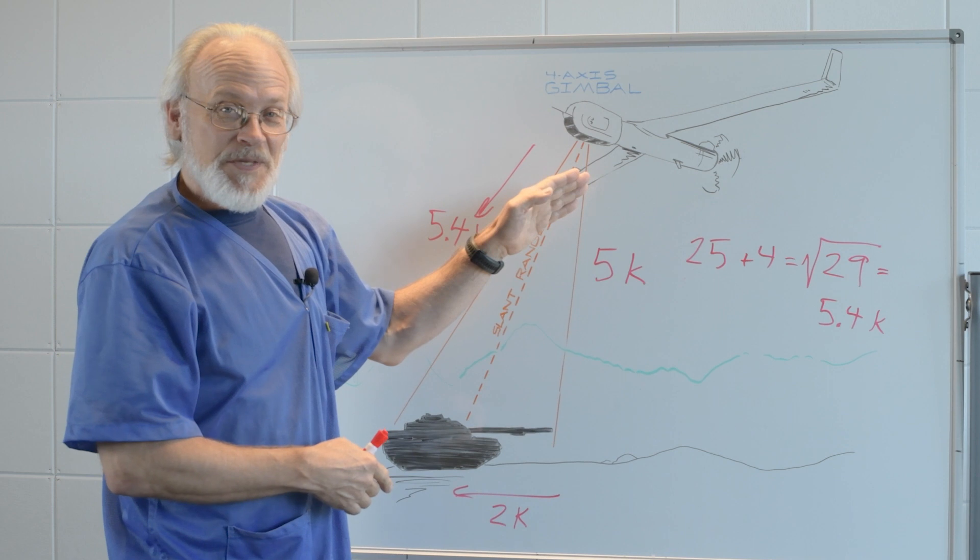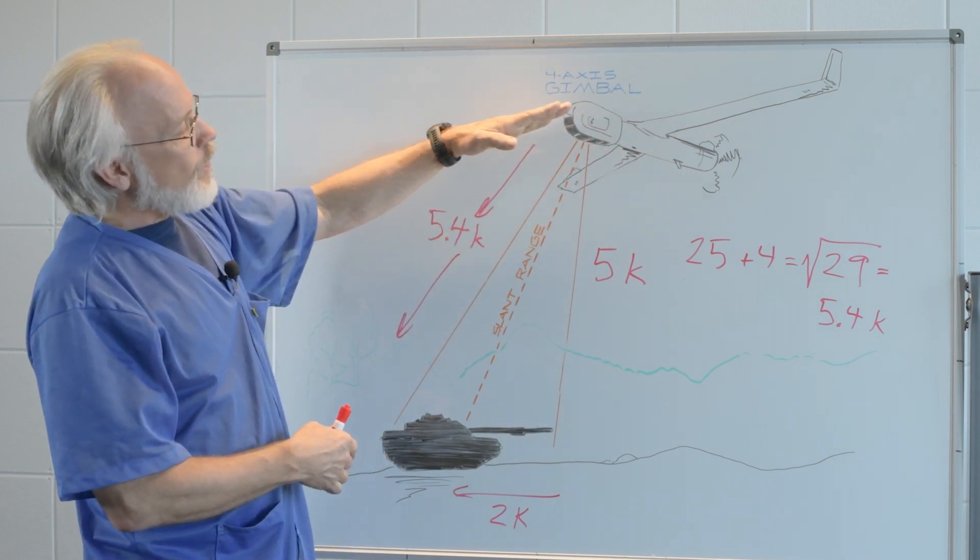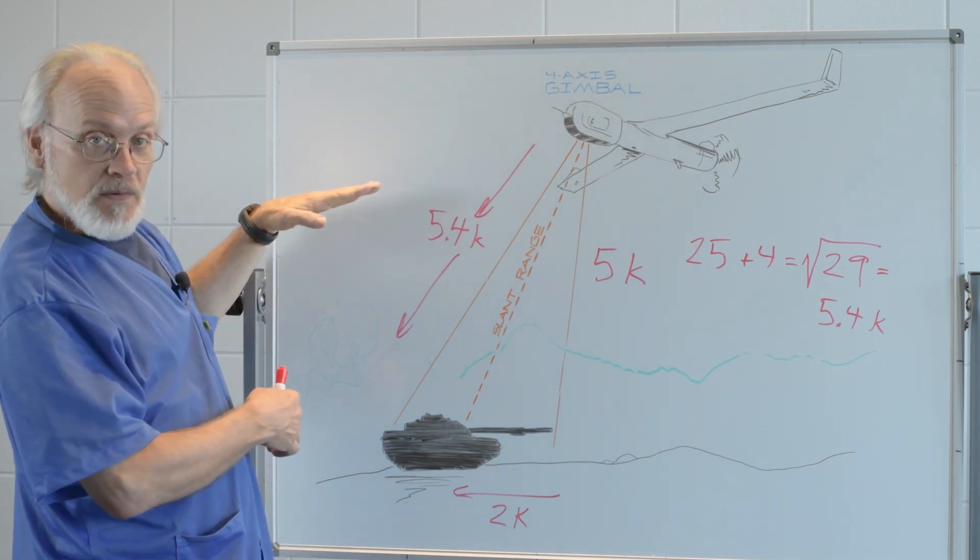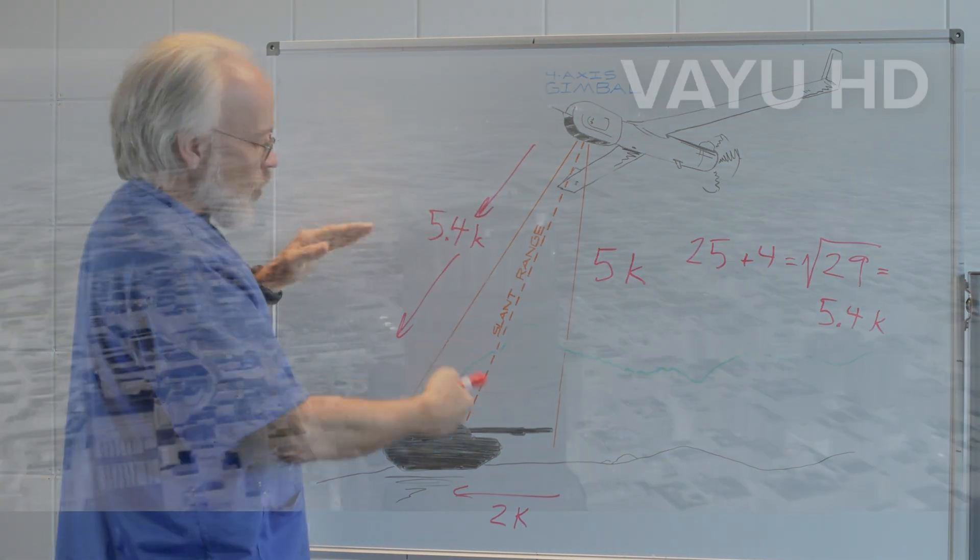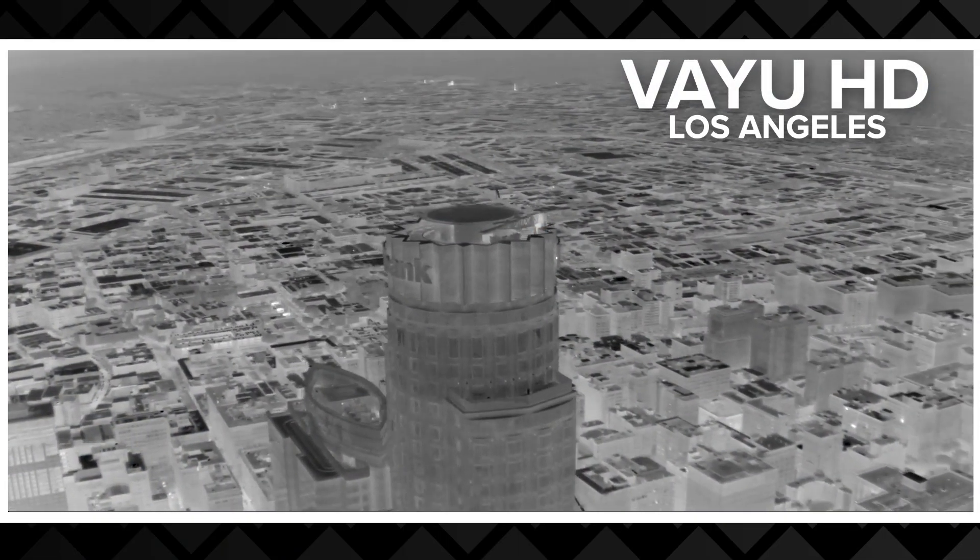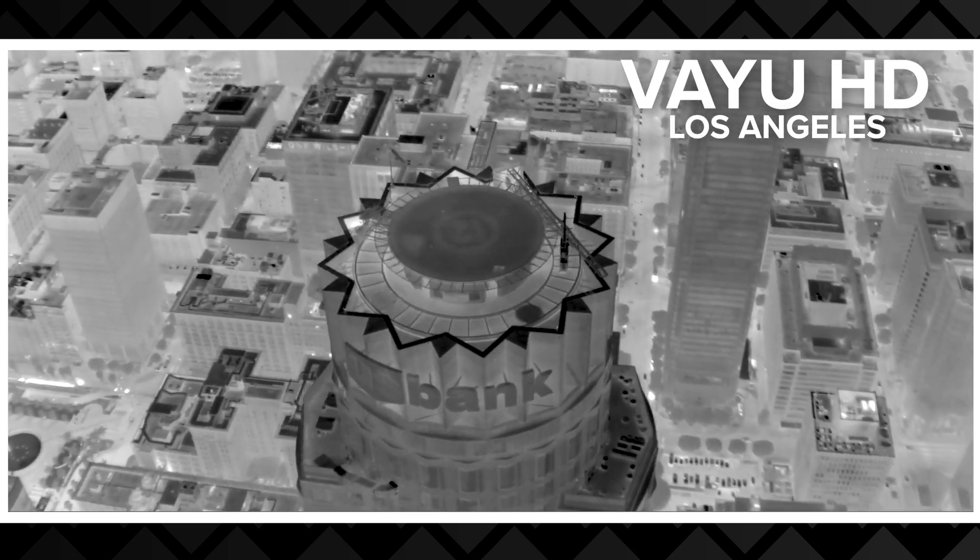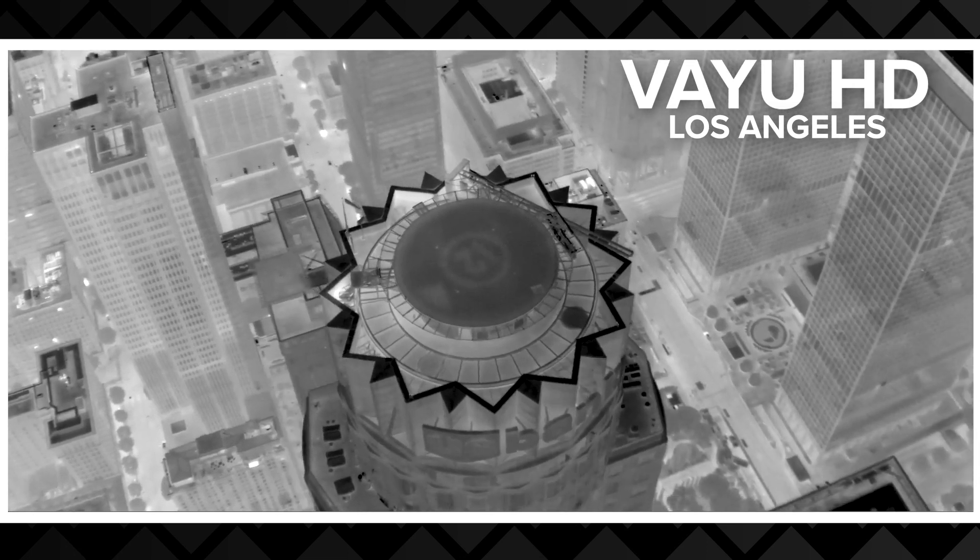This is a gimbaled imager in this example, and so as it moves its imager up to a more shallow imaging angle, the slant range will become more dominated by the horizontal distance. The vertical distance still factors in, but you can imagine at a much shallower imaging angle, the horizontal distance becomes much more of a factor in that calculation.